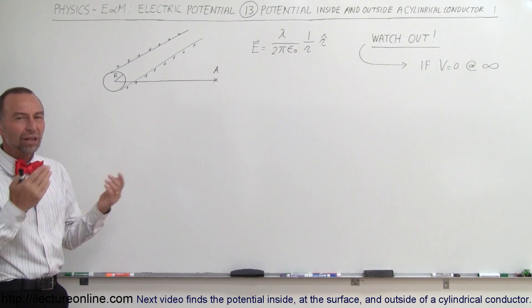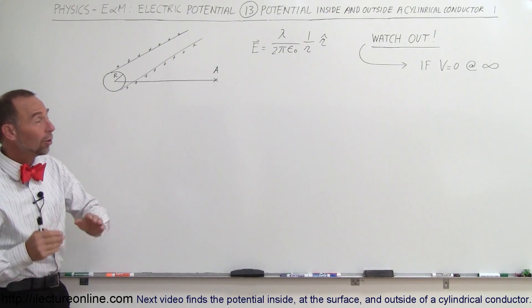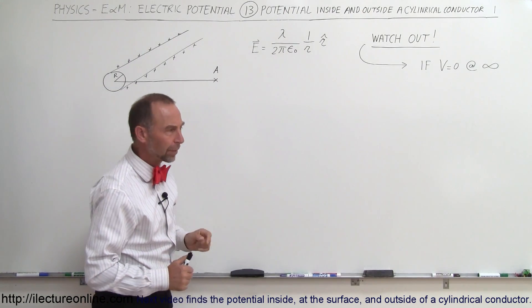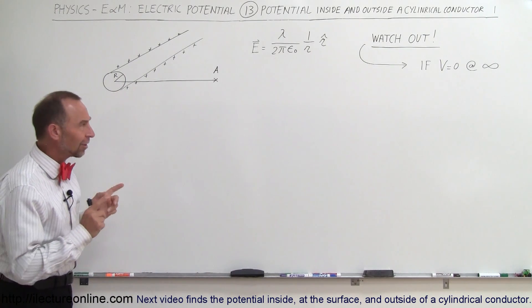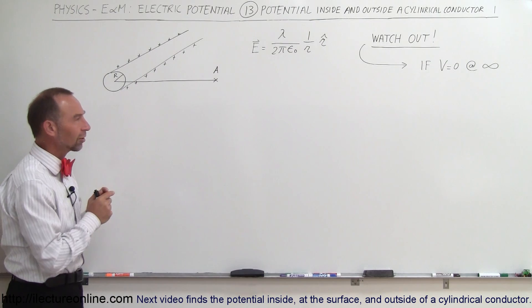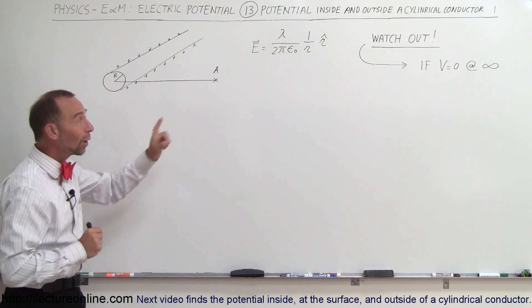Now let's assume it's an infinite cylindrical conductor, and if so, then this would be the electric field outside the conductor. Now here we have a slight problem. With the sphere we can make this work, but with a cylindrical conductor like this, we got to watch out.